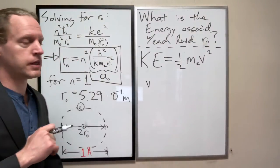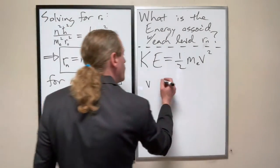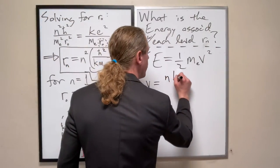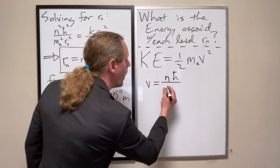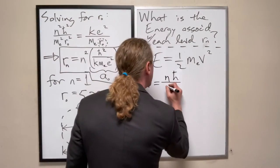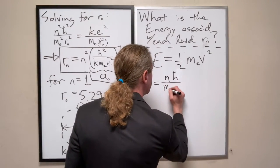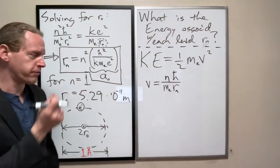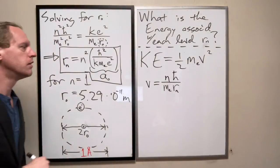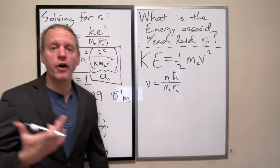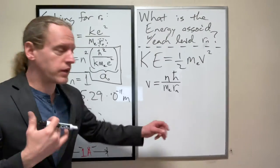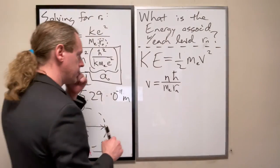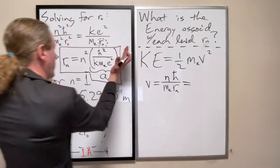So from de Broglie's hypothesis, we had determined that, and combined with the energy levels, this was n h-bar over, what was it, m, yeah from angular momentum, m_e times r sub n. And again, I'm going to allow for n to be any natural number here. And we had also independently determined that we can write r sub n as n squared times a nought. That's what this equation here is.